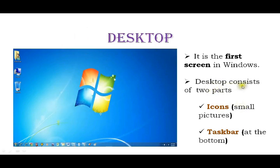The desktop consists of two parts. The first part is icons. Icons are identified as small pictures. For example, you can see a computer picture icon. These are small pictures we can see as icons on the desktop.